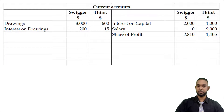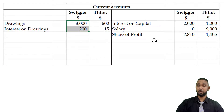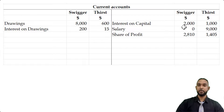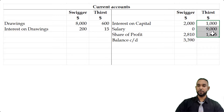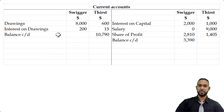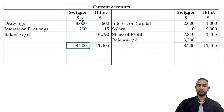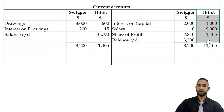Now we balance off the current accounts. For Swigger, earnings were about $4,800 but withdrawals were about $8,200, so there's a debit balance carried down. We add up the debit and credit columns and find the difference, giving a balance of $3,390. For Thirst, the credit side is about $11,405 versus only $615 on the debit side, leaving a credit balance carried down. The totals on each side match due to the balancing figures, which are then brought down to the next period.